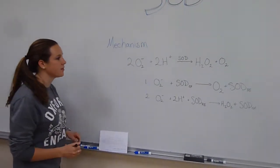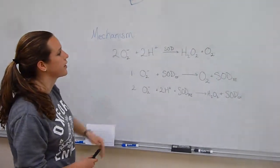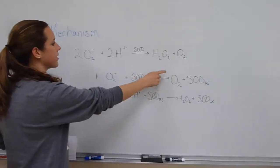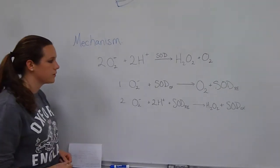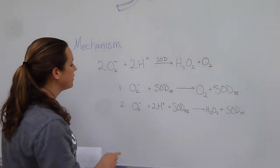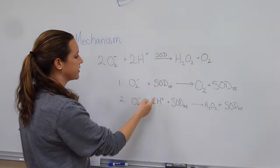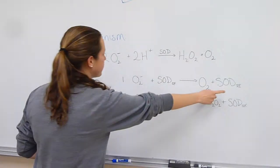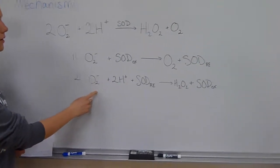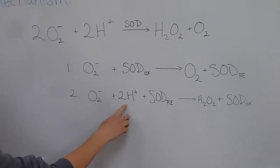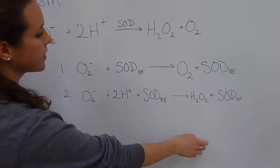This is the mechanism for SOD. The overall reaction involves two superoxide anions being combined with two hydrogen ions by SOD to form hydrogen peroxide and oxygen. The reaction can be broken down into two half-reactions. In the first half-reaction, one superoxide anion is oxidized by SOD, and SOD is then reduced. In the second half-reaction, the superoxide anion is combined with two hydrogen ions by the reduced form of SOD to form hydrogen peroxide.